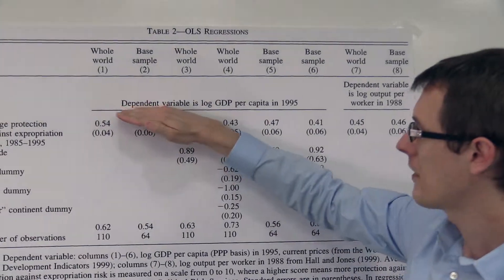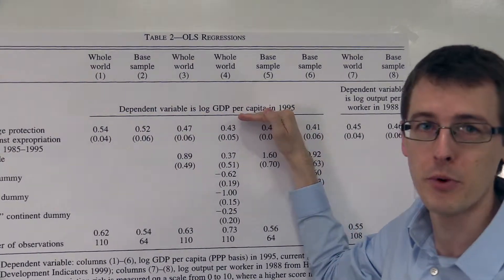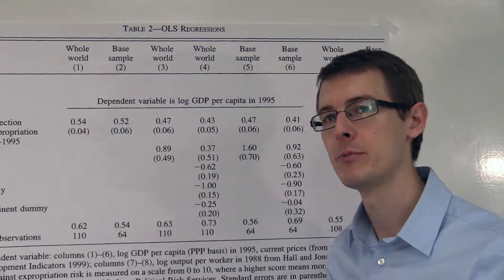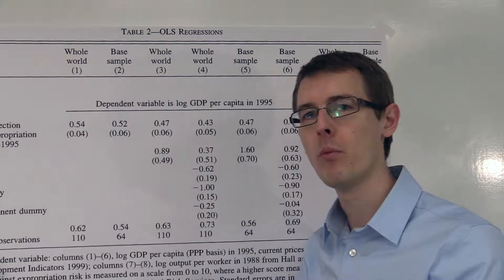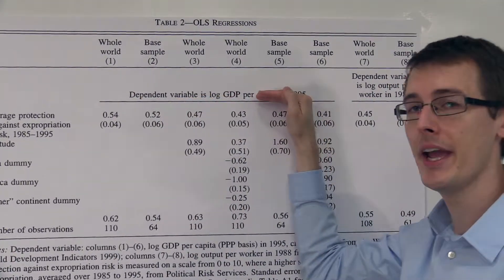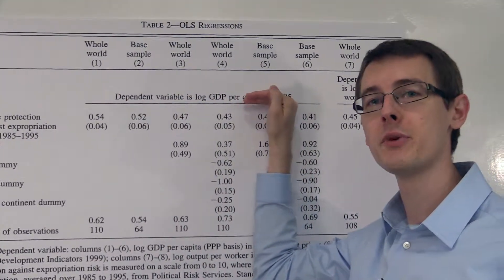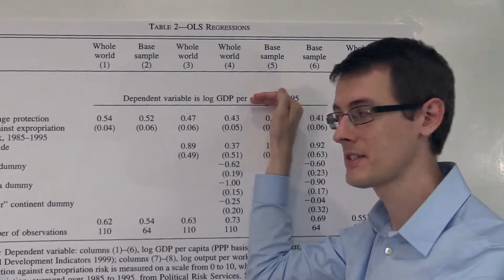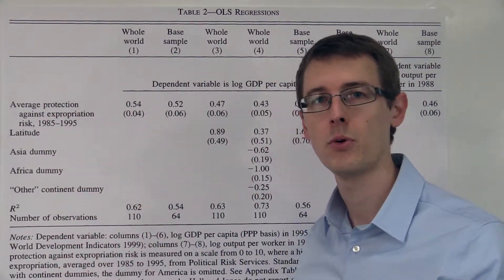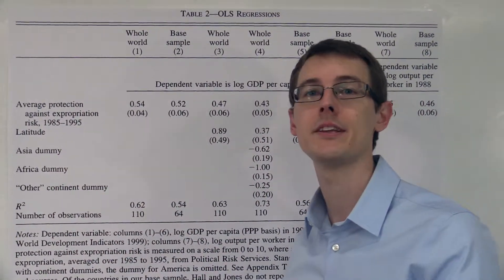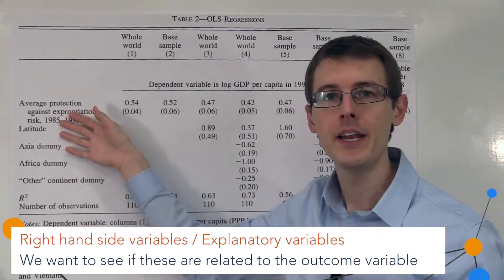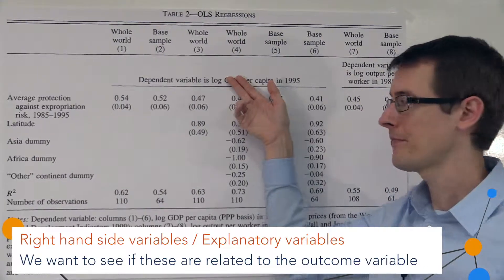Here I've got what my dependent variable is, or my outcome variable. Regressions are all about looking at relationships between one variable and another variable. This is the main variable we want to know how it's related to something else. These variables we call the right-hand side variables, or our explanatory variables — the variables we want to know how they relate in our data to the outcome variable.